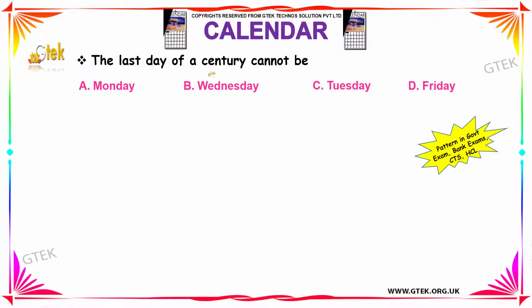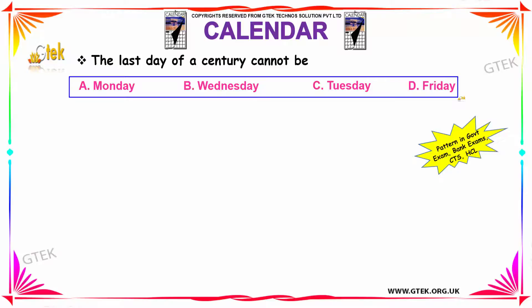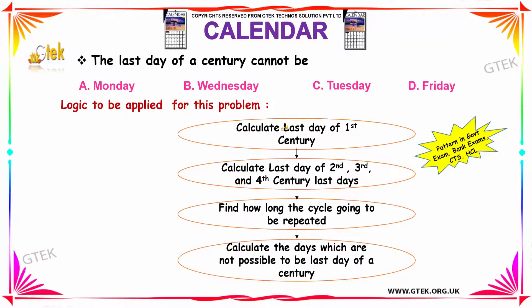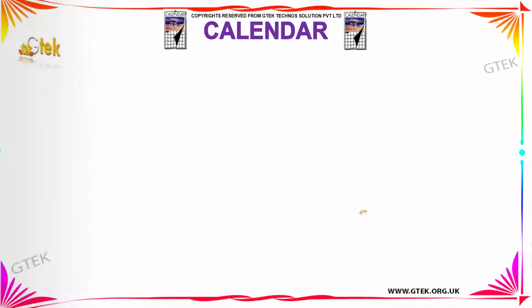Next question: which of these options cannot be the last day of a century? These types of questions appear in government, bank, CTS, and HCL exams. The logic to apply is: calculate the last day of the first century, then calculate the last day of the second, third, and fourth century, find how long the cycle repeats, and identify which days are not possible as the last day of a century.